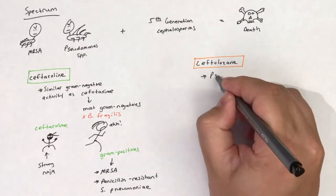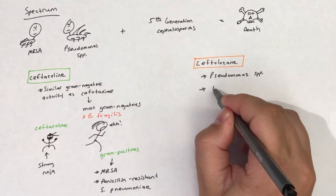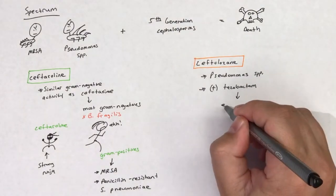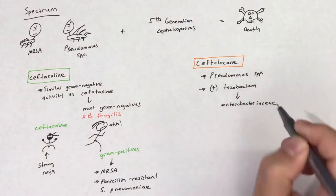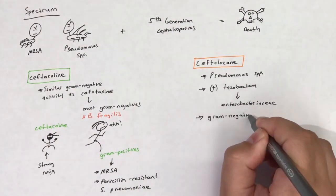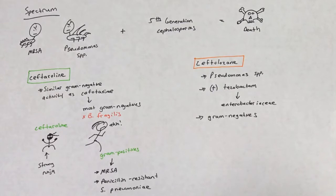Ceftolozane has increased activity against Pseudomonas species and is co-formulated with the beta-lactamase inhibitor tazobactam to provide increased activity against Enterobacteriaceae. Ceftolozane's main action is against gram-negative bacteria.